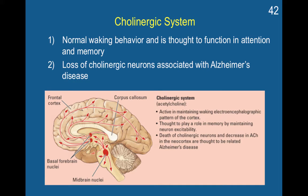Beginning with the cholinergic system: it mediates normal waking behavior and is thought to function in attention and memory. Loss of cholinergic neurons is associated with Alzheimer's disease. The cholinergic system uses acetylcholine as its primary neurotransmitter. You can see here nuclei in the brain stem and in the basal forebrain that send wide projections into the frontal cortex and all the way back into the parietal cortex, important for waking and attentive behavior.